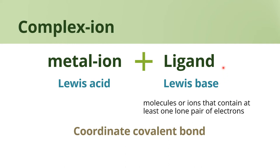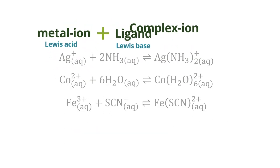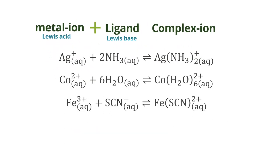You're going to see in the next slide examples of ligands. The bond between the metal ion and ligand is called a coordinate covalent bond — the ligand brings two electrons to form a covalent bond to the metal ion. On this slide I have some examples of complex ions.